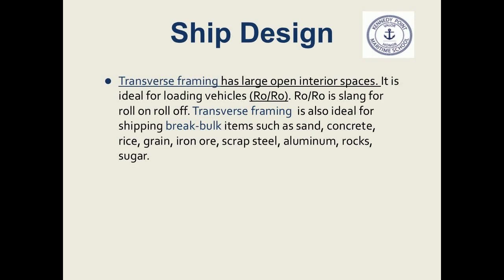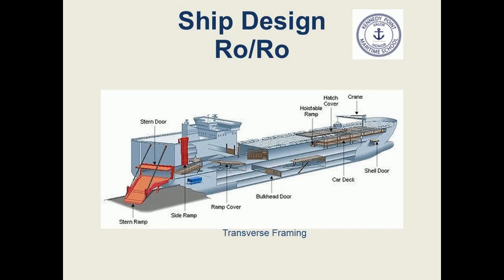There are two major types of framing when designing ships: transverse framing and longitudinal framing. Transverse framing has large open interior spaces. It is ideal for loading vehicles. Ships that haul vehicles are referred to as ro-ro ships or roll-on roll-off. Transverse framing is also ideal for shipping break bulk items such as sand, concrete, rice, grain, iron ore, scrap steel, aluminum, pea gravel, and sugar. A roll-on roll-off ship is built using transverse framing to create large open spaces.